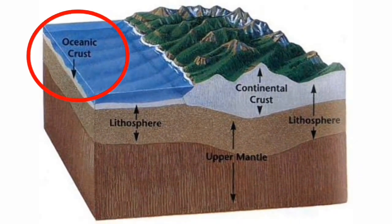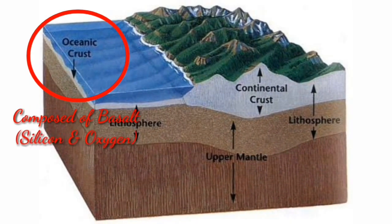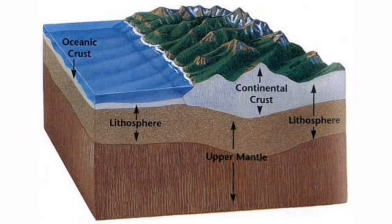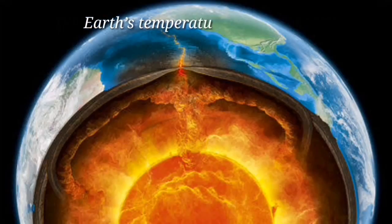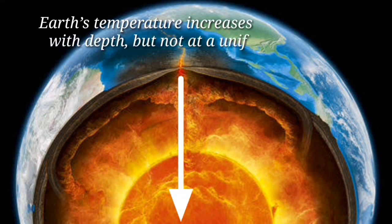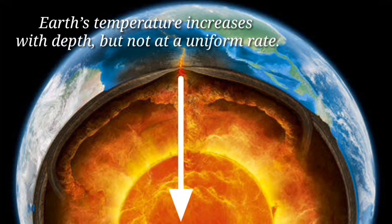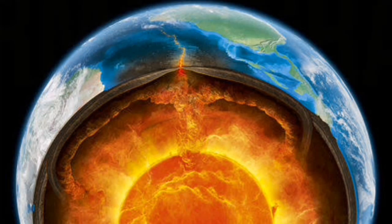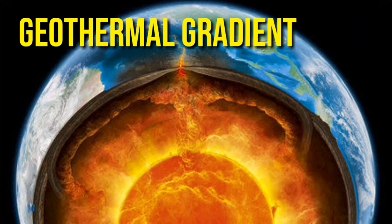The thinnest and outermost layer of the Earth is also divided into two: we have the oceanic crust, which is composed primarily of basalt, and the continental crust, composed of granite.